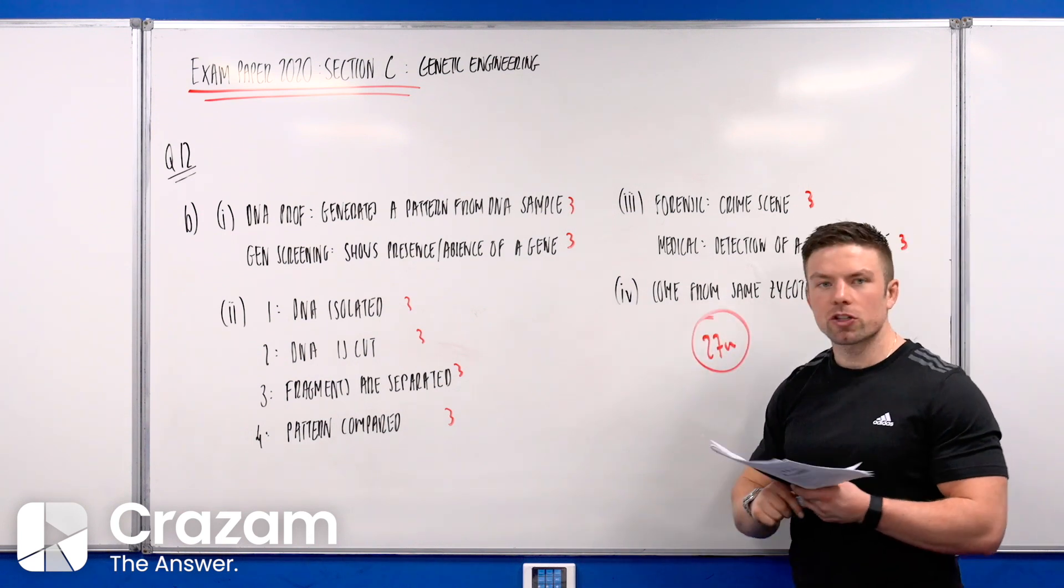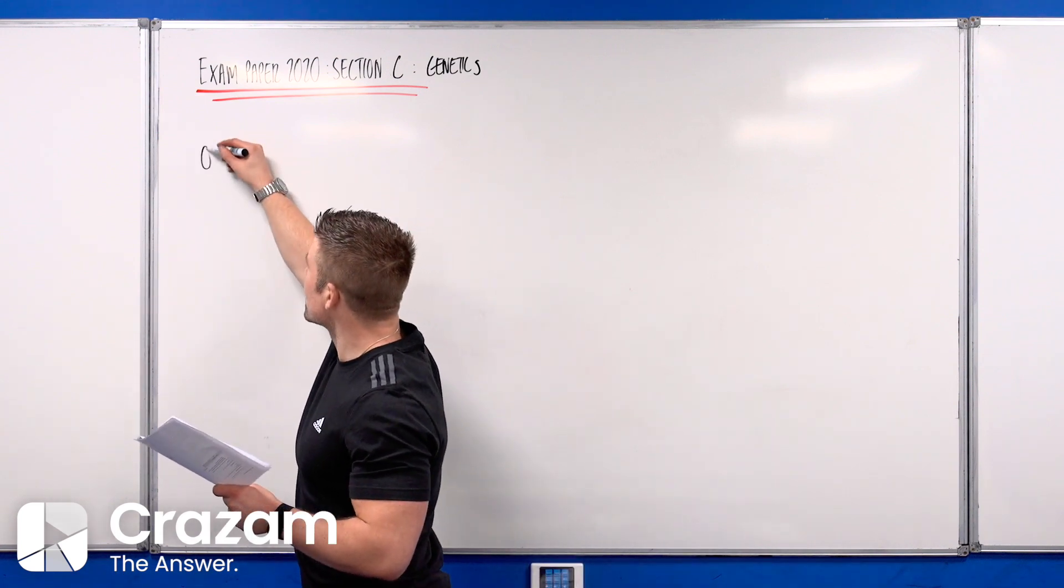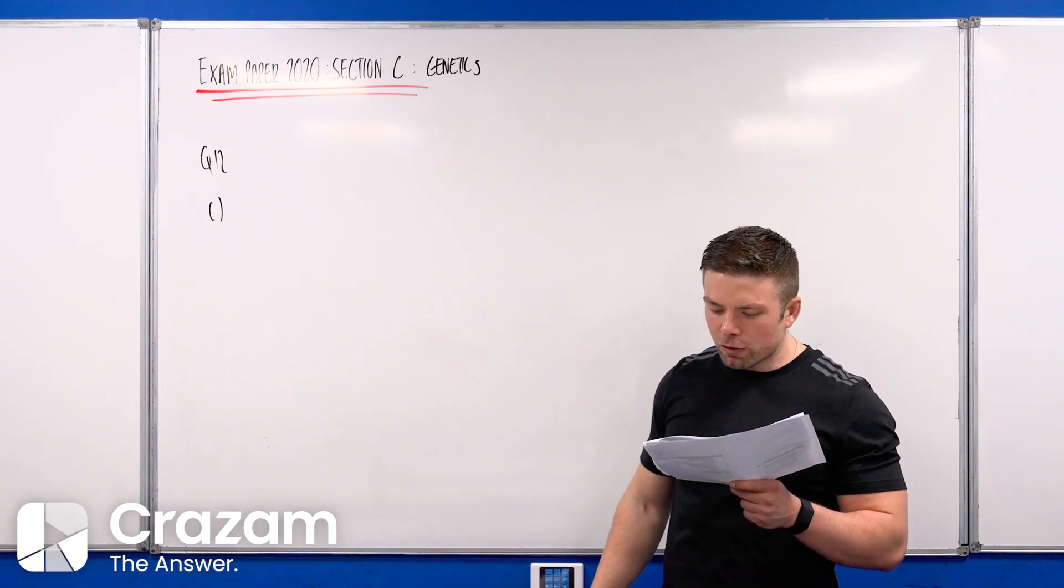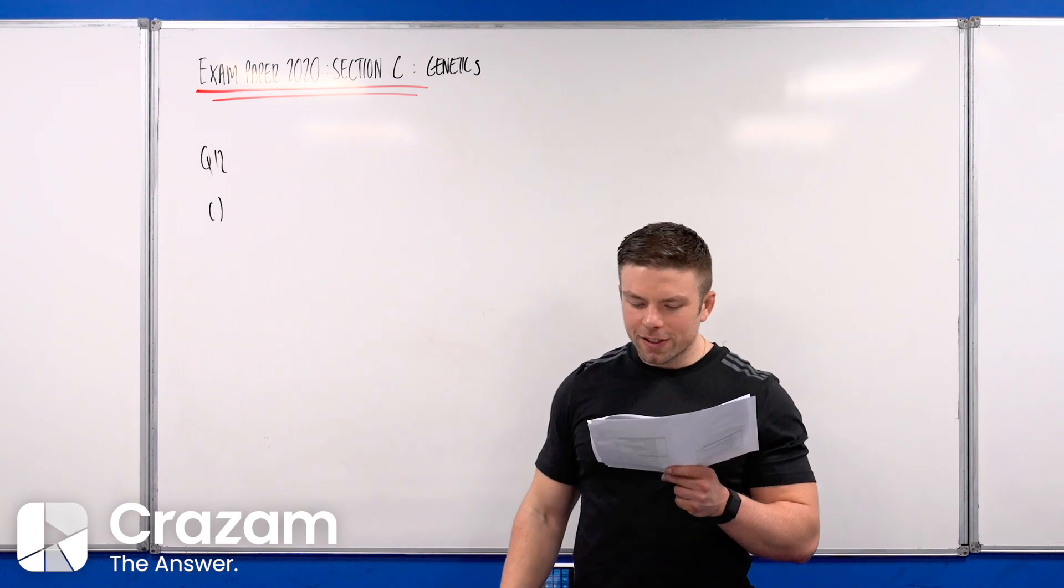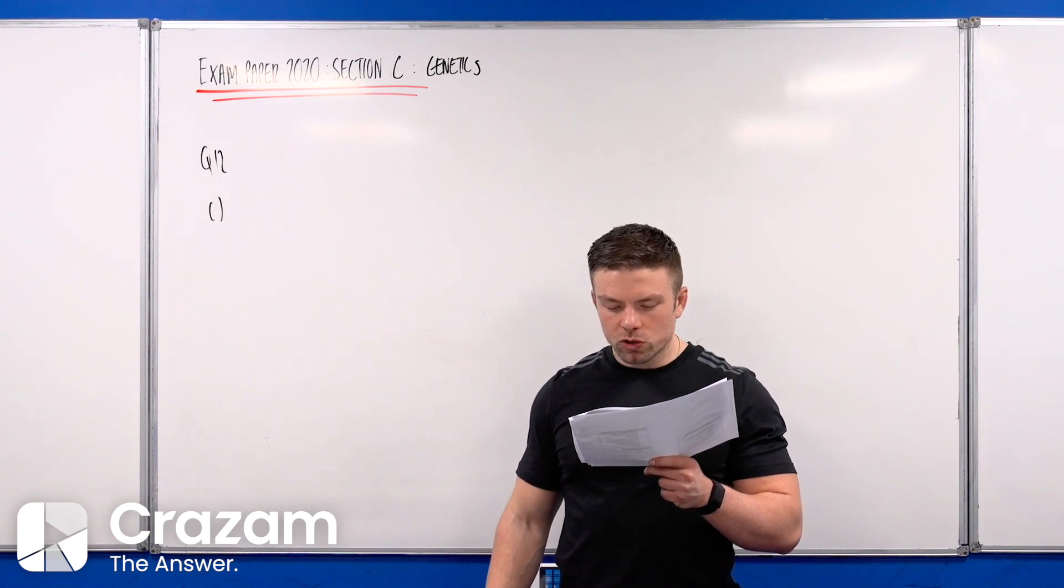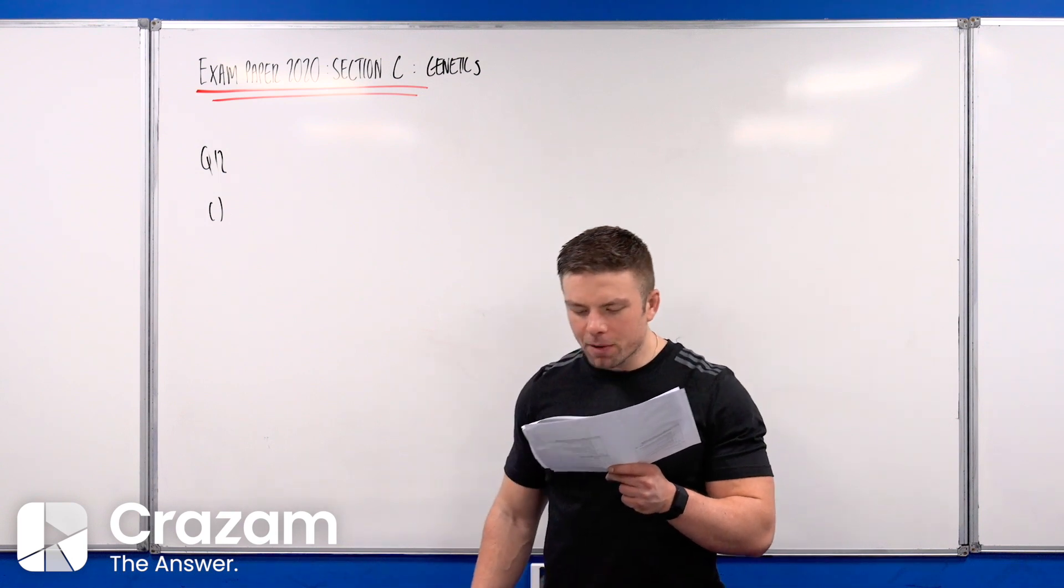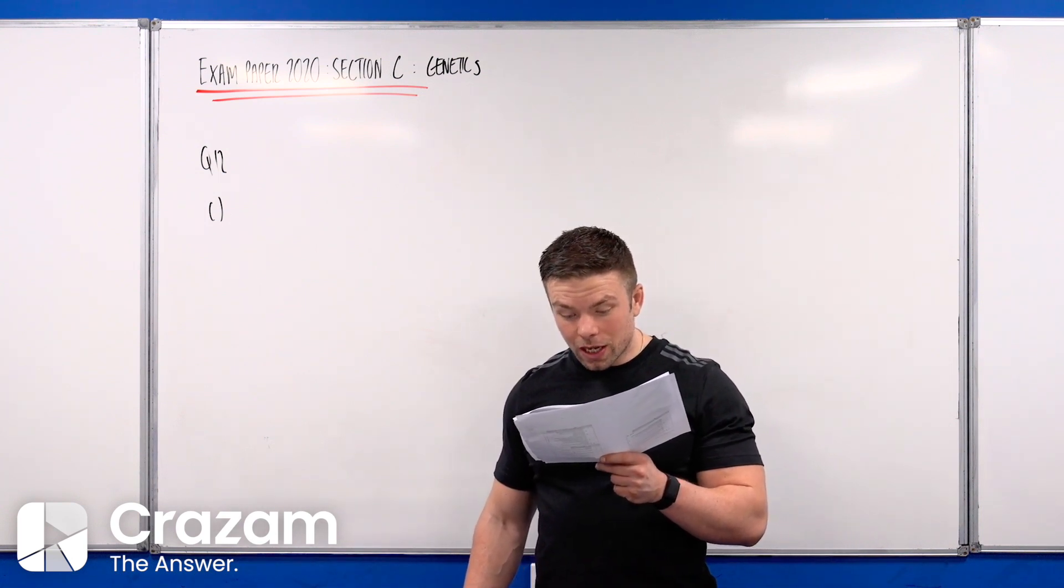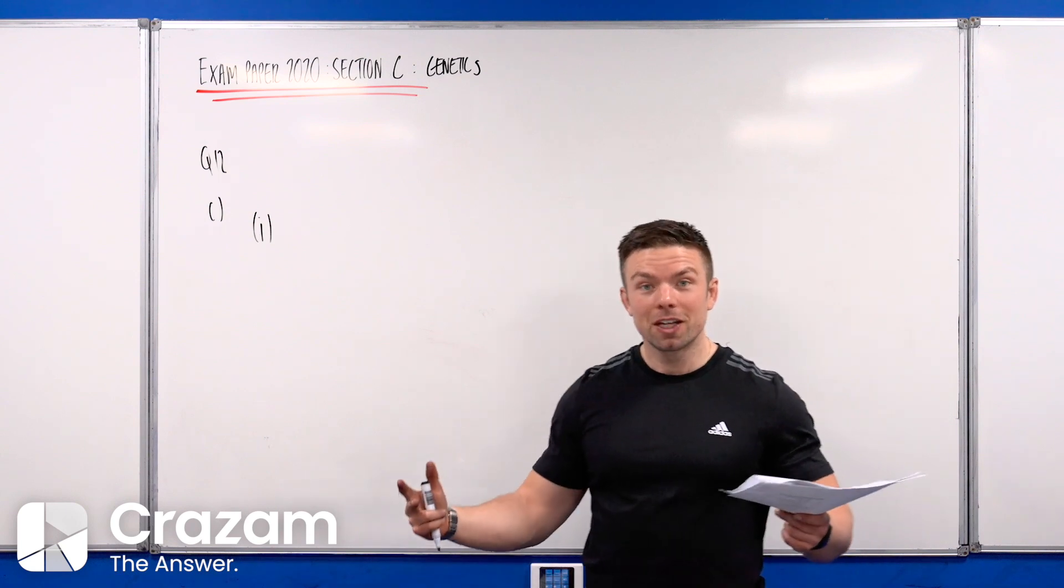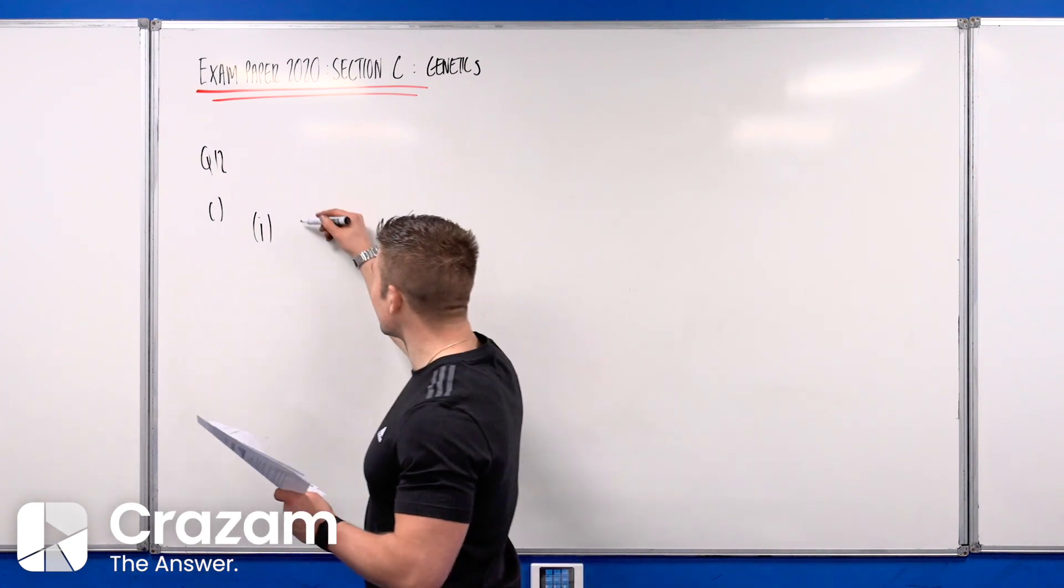This is the 2020 Section C genetics question 12c, worth 24 marks overall. It says in Andalusian chickens, the allele for black feathers B exhibits incomplete dominance over the allele for white feathers lowercase b. When a black homozygous rooster is crossed with a white homozygous hen, all the chicks will have an intermediate phenotype of speckled color capital B lowercase b, known as blue. Part 1: explain the terms underlined. The first is allele - a version of a gene or alternate form of the same gene.